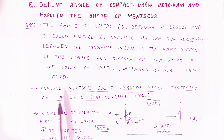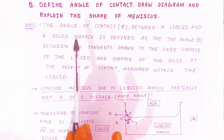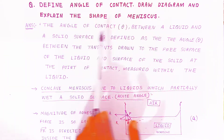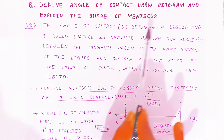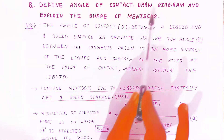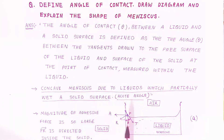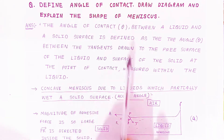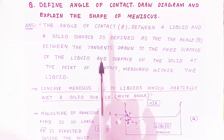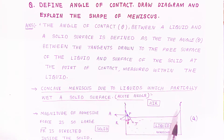Now we are going to see how, because of this angle of contact, the liquid takes different shapes. We will draw the diagram and explain the shape of the meniscus. The liquid surface forms different types of meniscus because of the angle of contact.